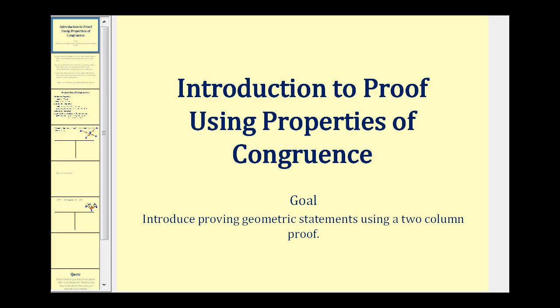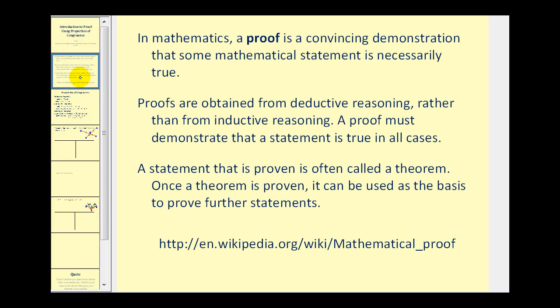Welcome to an introduction to proof using properties of congruence. The goal is to introduce proving geometric statements using a two-column proof. In math, a proof is a convincing demonstration that some math statement is true. Proofs are obtained from deductive reasoning rather than from inductive reasoning, and a proof must demonstrate that a statement is true in all cases.